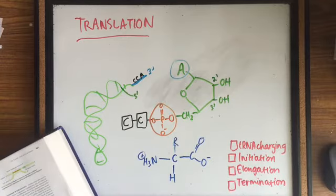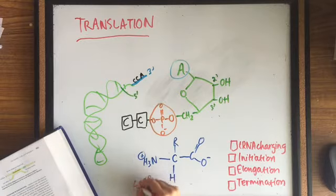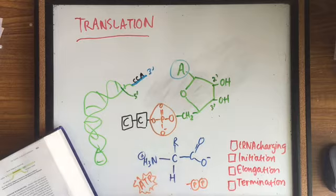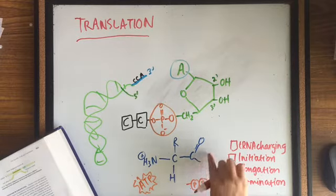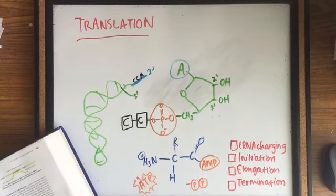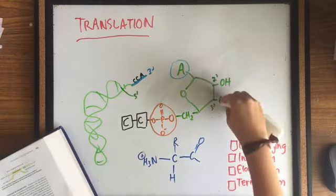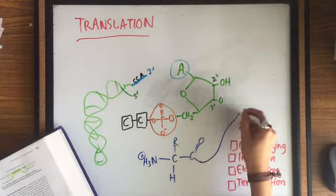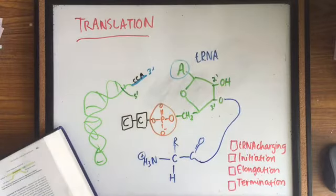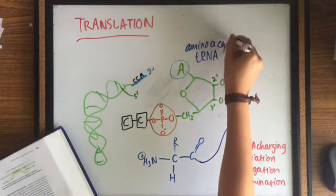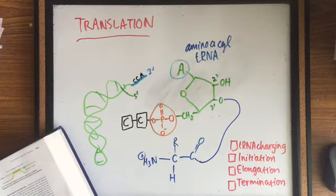tRNA charging is when the amino acid attaches to the 3' end of the tRNA, in which the base is always adenine. In the first step, the amino acid reacts with ATP, which produces aminoacyl AMP and two phosphate. In the second step, the amino acid is transferred to the tRNA and AMP is released to form aminoacyl tRNA, in which the amino acid is linked to its appropriate tRNA.